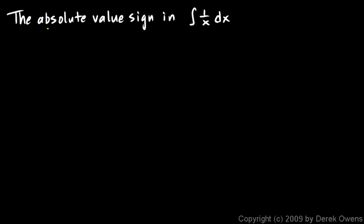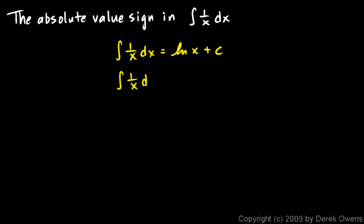Now we're going to talk about the absolute value sign that shows up when we do this integration — the integral of 1 over x dx. We said earlier that the integral of 1 over x dx is equal to the natural log of x plus c, but you might have seen in your textbook it written like this: the integral of 1 over x dx equals the natural log of the absolute value of x plus c. So where did the absolute value sign come from? That's what I'm going to try to explain now.